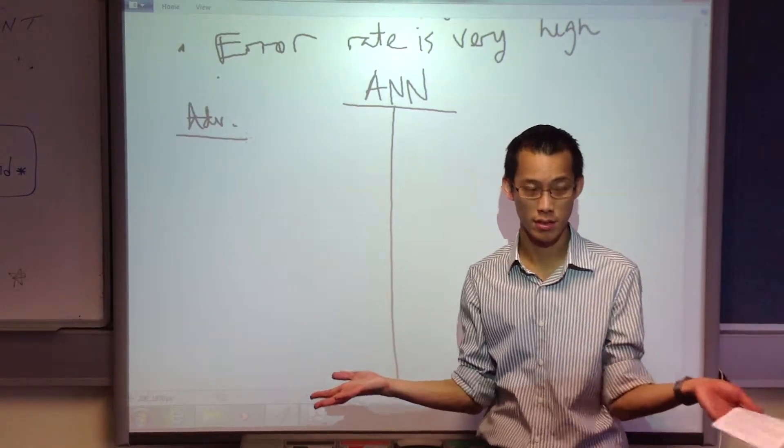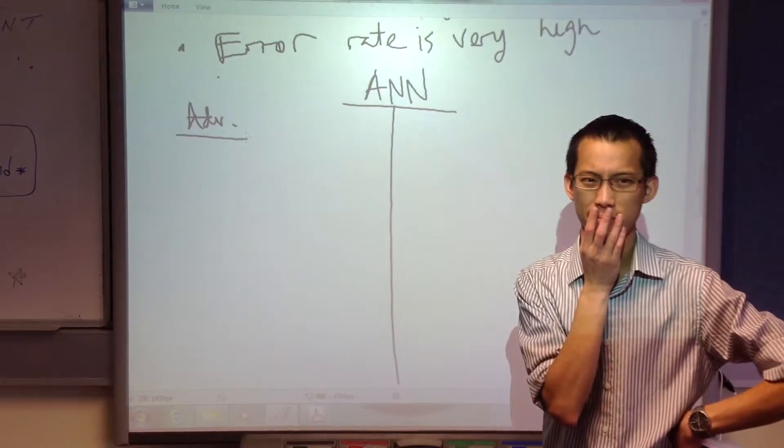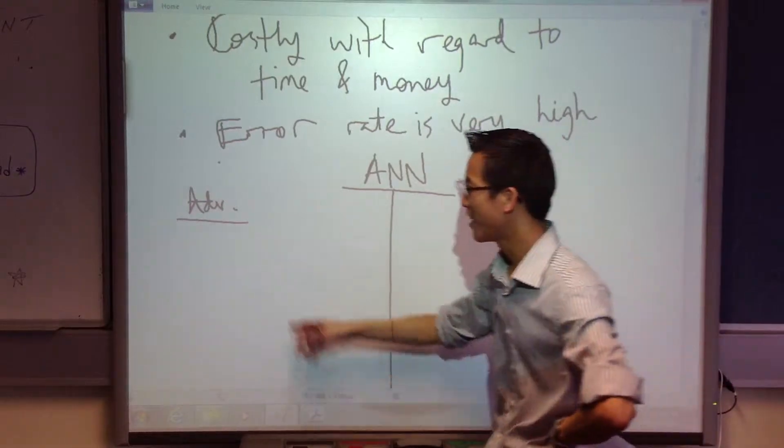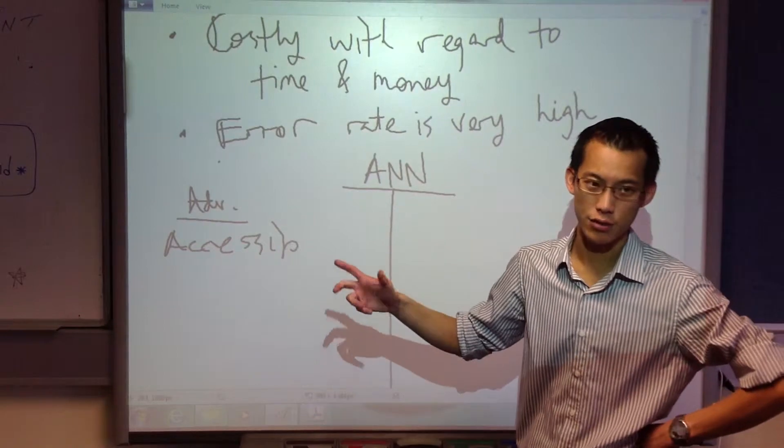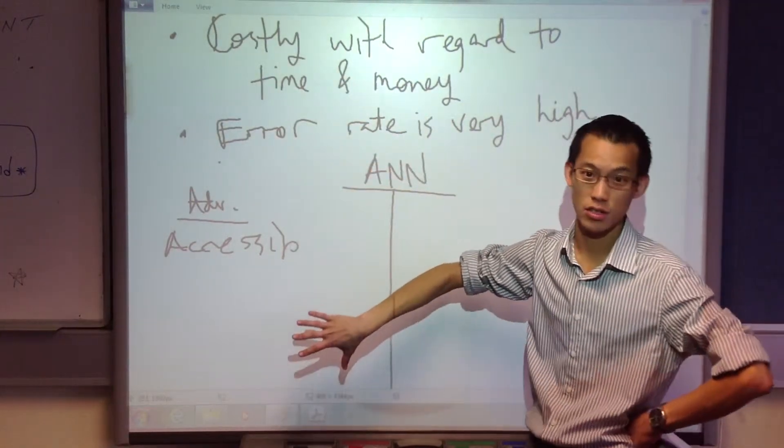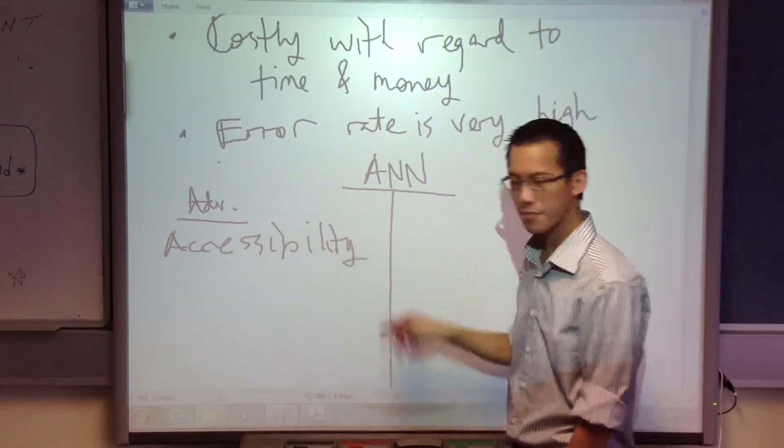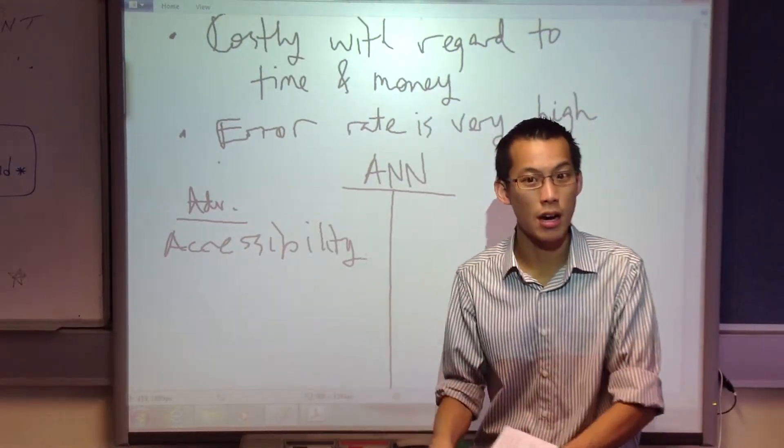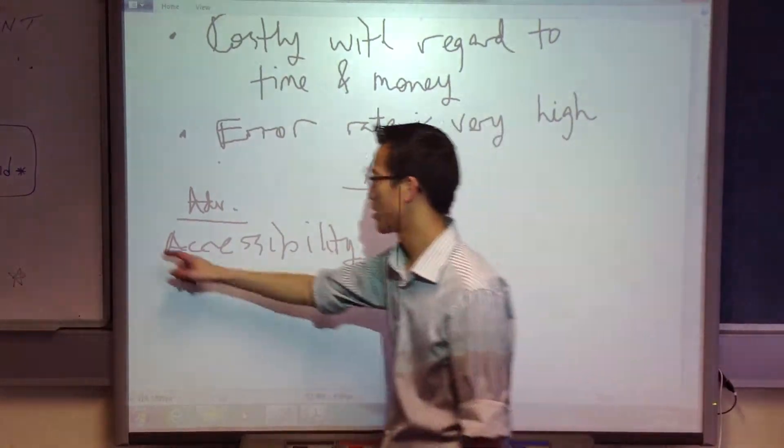Good. So this doesn't just apply to artificial neural networks, the comparison is between humans and an electronic decision support system of some kind. So we did a whole list of these. Accessibility. PapNet can run 24 hours a day. It can just keep on going, anyone can get to it in time. You're not restricted to when these cytologists are available.